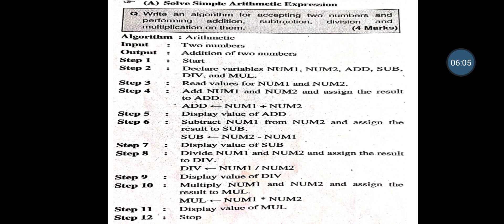Step 6: Subtract Num1 from Num2 and assign the result to Sub — Sub = Num2 - Num1. Step 7: Display the value of Sub. Step 8: Divide Num1 and Num2 and assign the result to Div — Div = Num1 / Num2. Step 9: Display the value of Div. Step 10: Multiply Num1 and Num2 and assign the result to Mul — Mul = Num1 * Num2. Step 11: Display the value of Mul. When all outputs are obtained, the algorithm must stop.